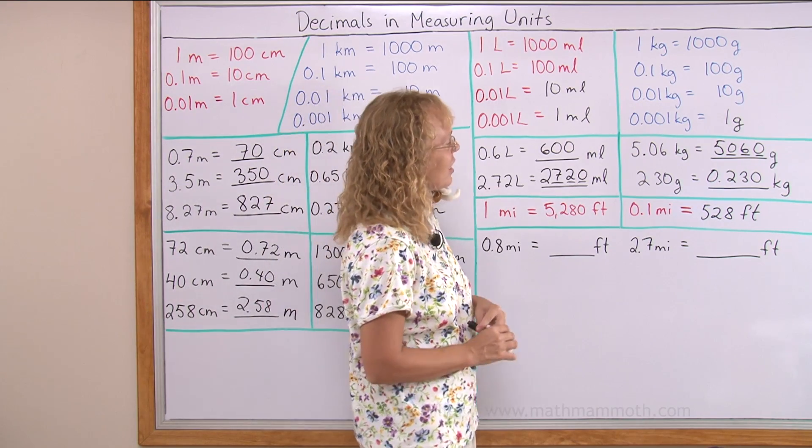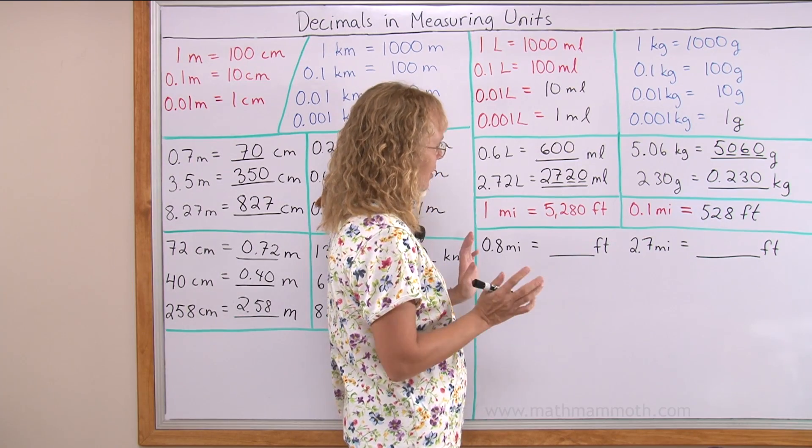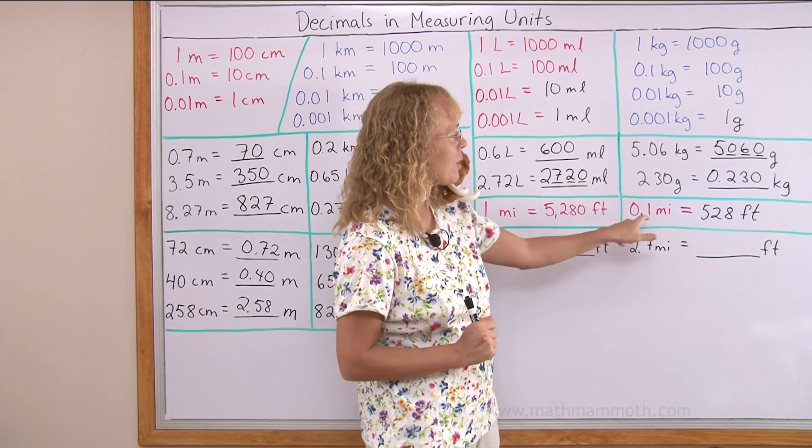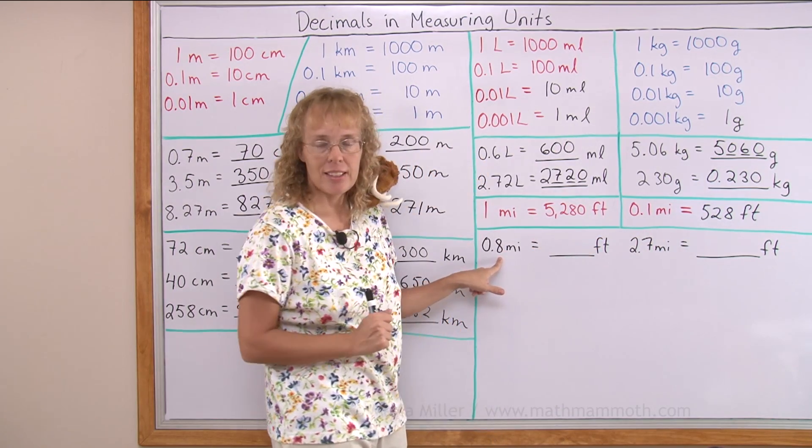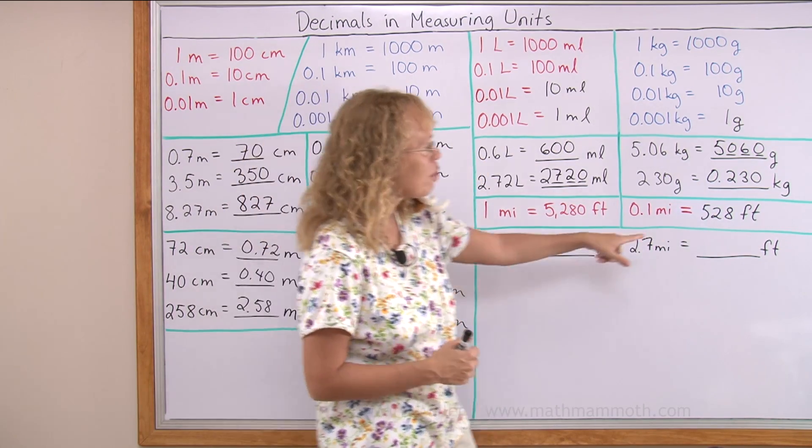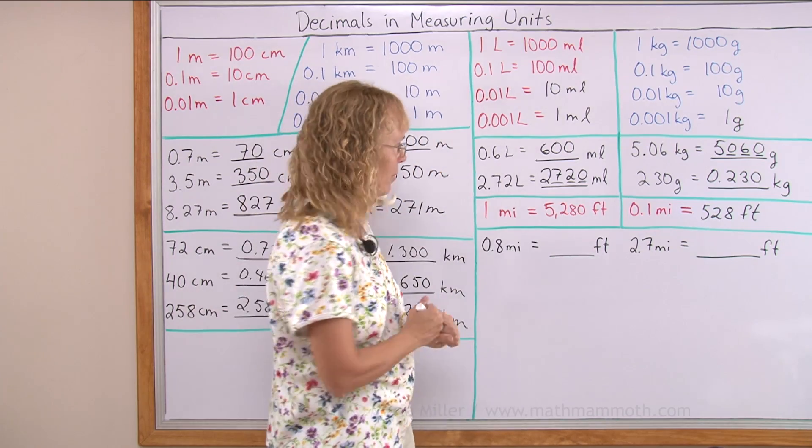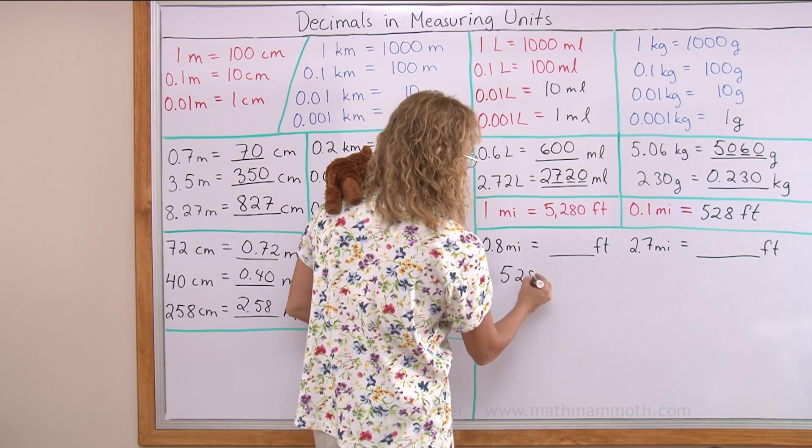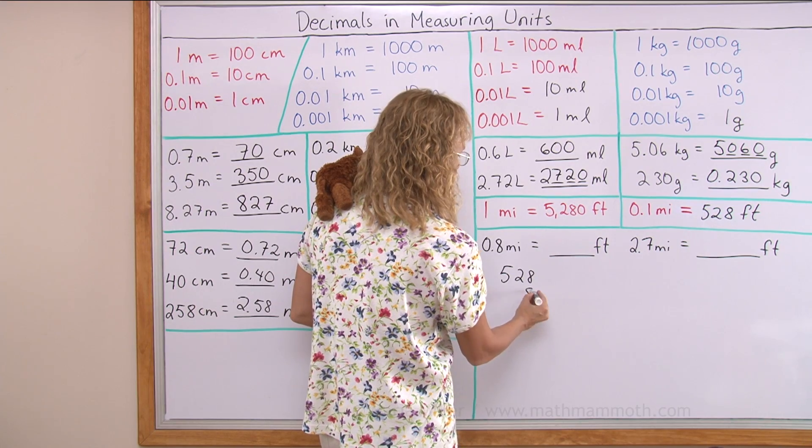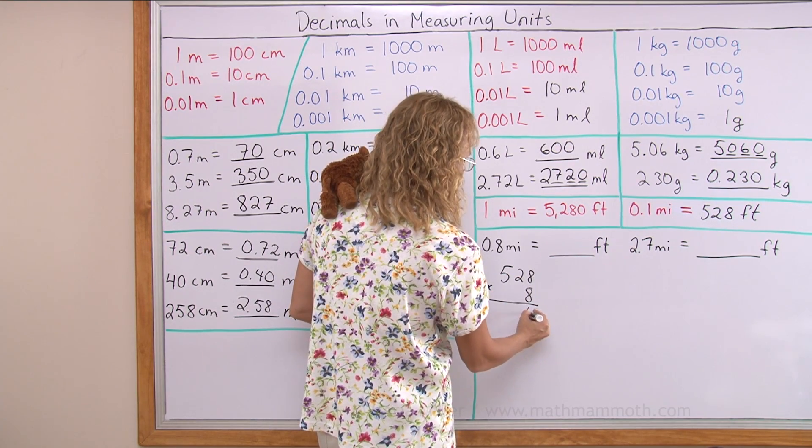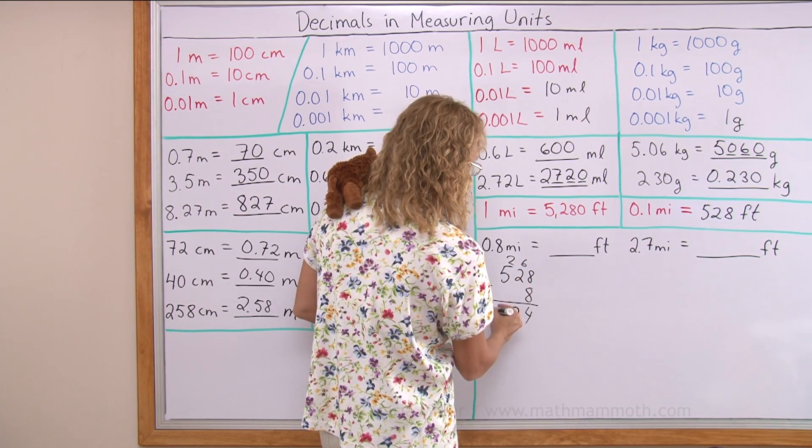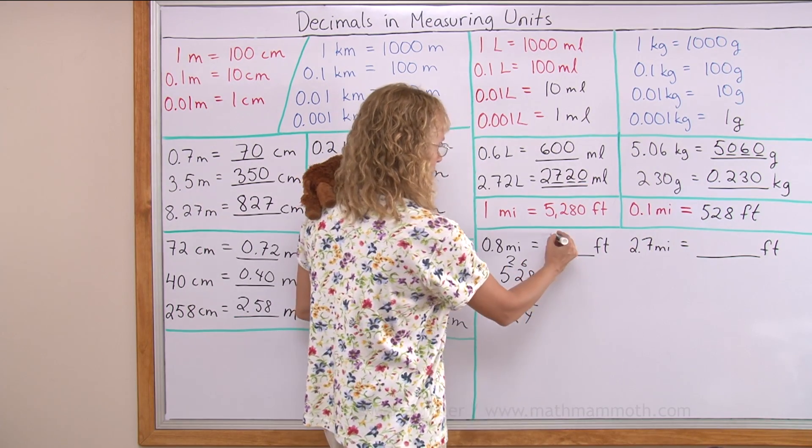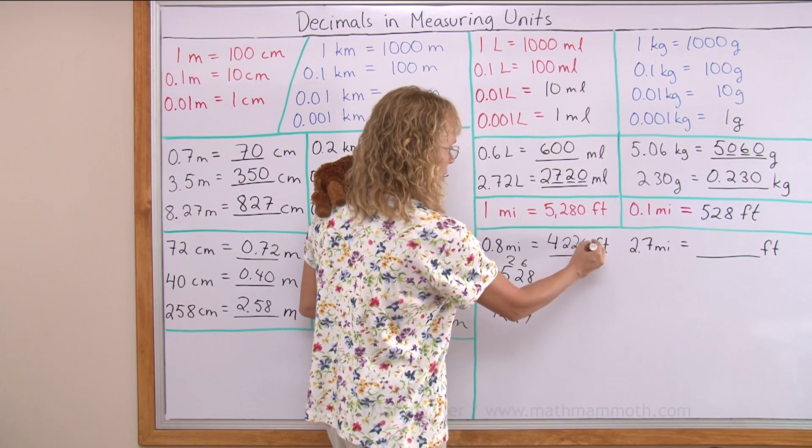Now, since I know what one tenth of a mile is, it's asking for eight tenths of a mile. Then I can just multiply that number by eight. 528 is one tenth of a mile and that times eight. So we get 64 plus 16 plus 6, 22 and 42. It is 4,224 feet.